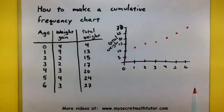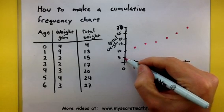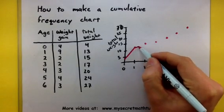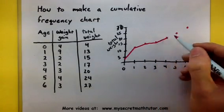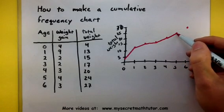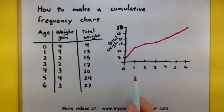What this type of chart is really good for is showing us between what years the change was the greatest. These are going to be the steeper parts of the graph. You can see that between age zero and age one, this is where it was the steepest, and sure enough, this is where we had the most weight gain.